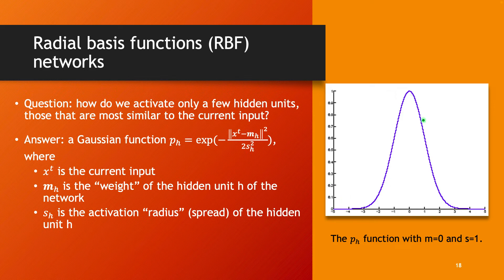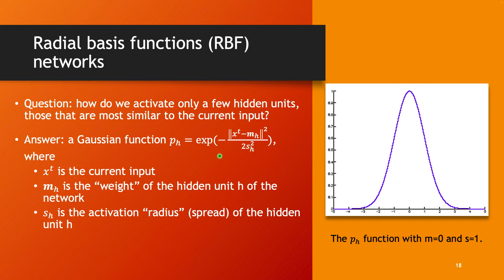Visually, for M equals zero and spread equal to one, the Gaussian function achieves its maximum activation exactly at the center MH, and decreases very quickly as input data points move further away from MH. This is exactly what we wanted: high activation close to the vector represented by the hidden unit, and very little or no activation further away from that vector.